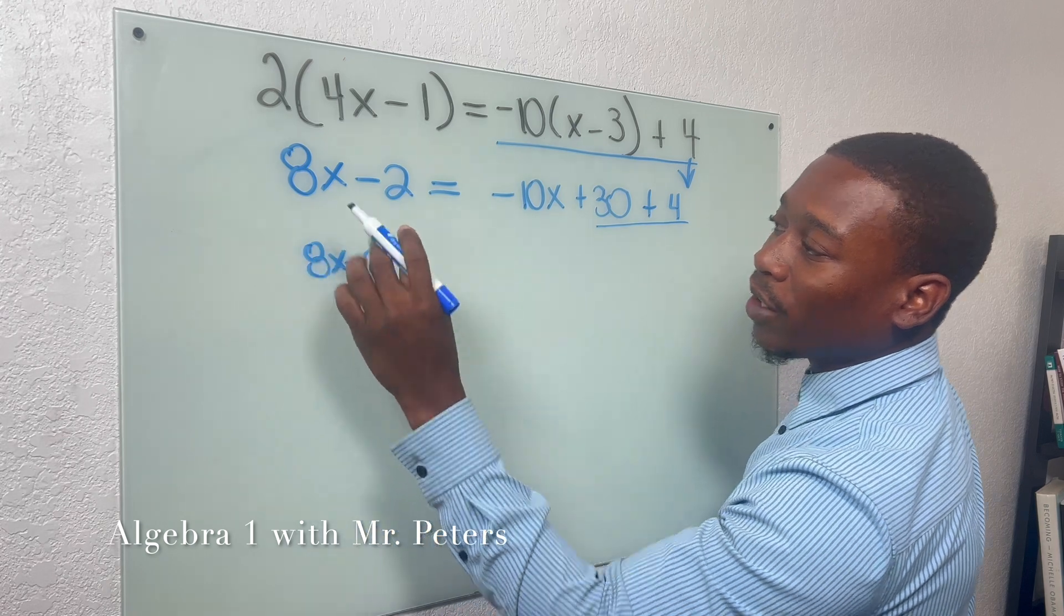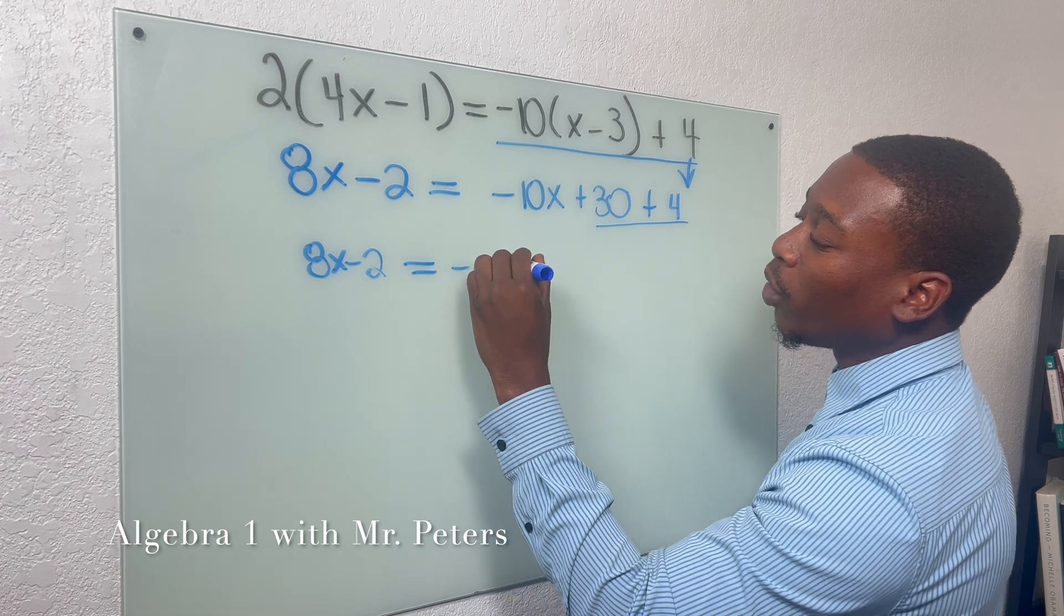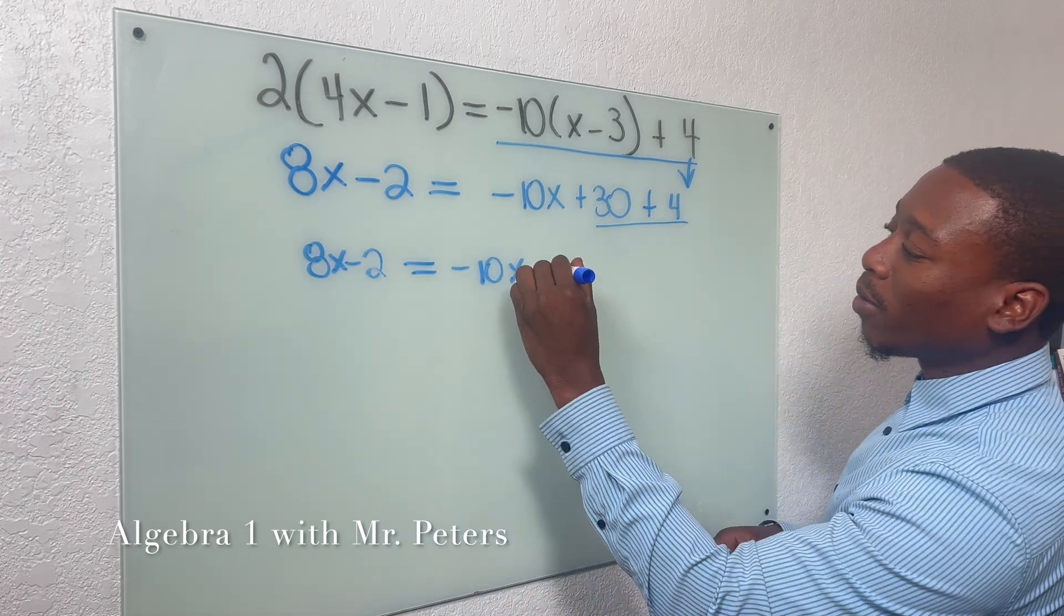But the better thing to do is to simplify each side first. So if there's no like terms like on this left-hand side, we're going to keep it the same. But if we do have like terms, we're going to simplify.